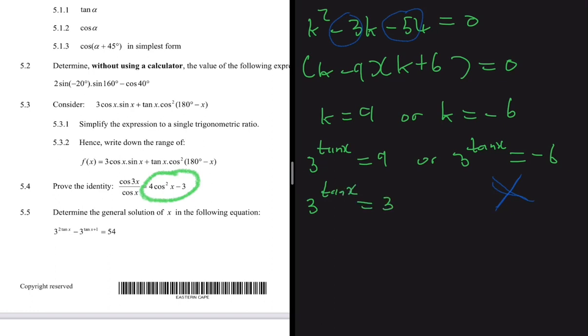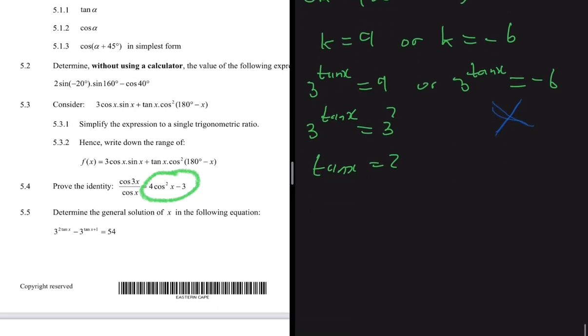So 3^(tanX) = 3², now we drop the bases. So tanX = 2, which means X = arctan(2) = 63.43°.